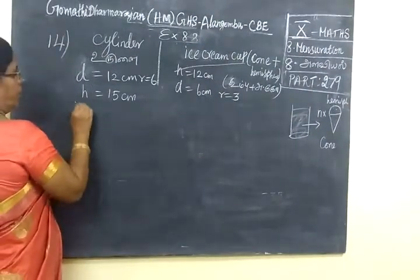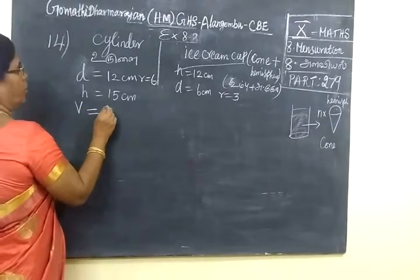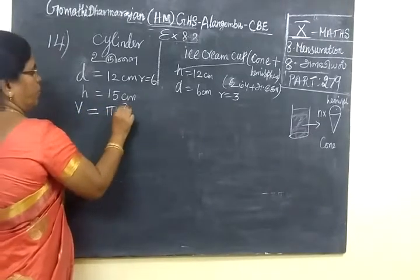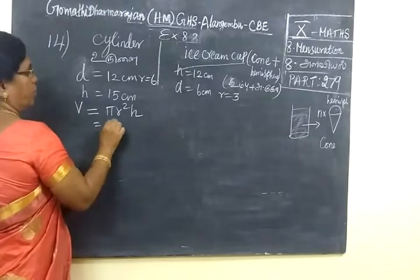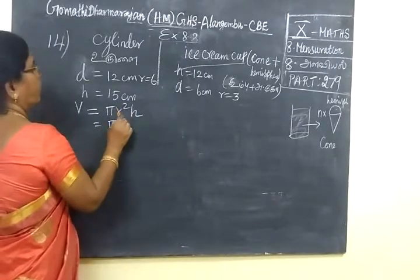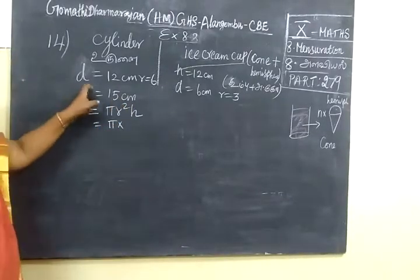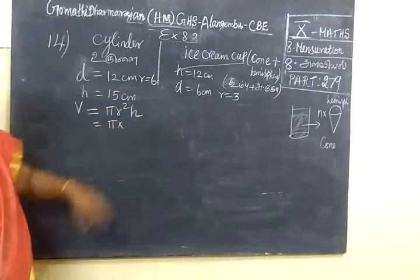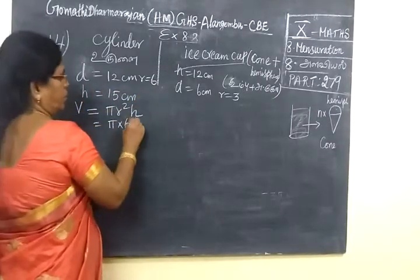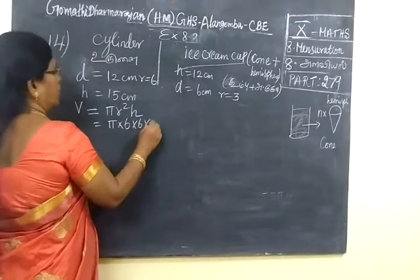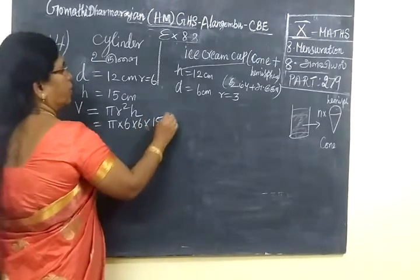First, we find the volume. This is the cylinder volume. The diameter is 12 cm, so radius equals 6 cm, and height is 15 cm.